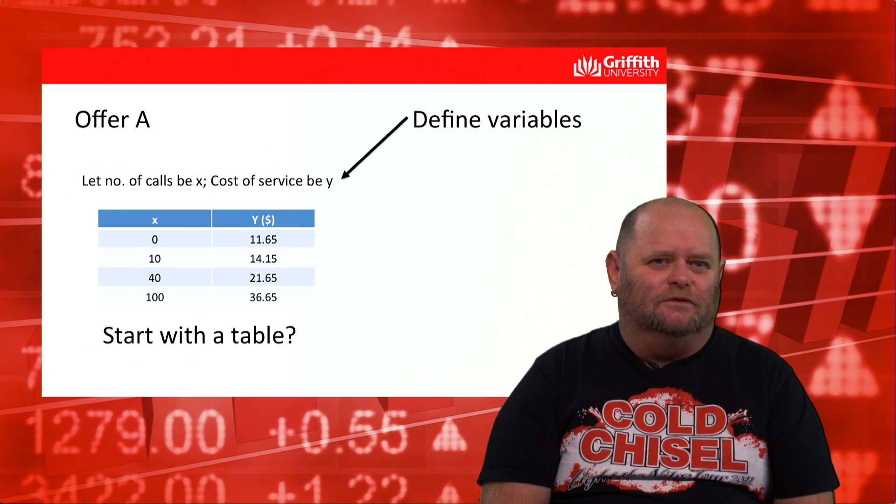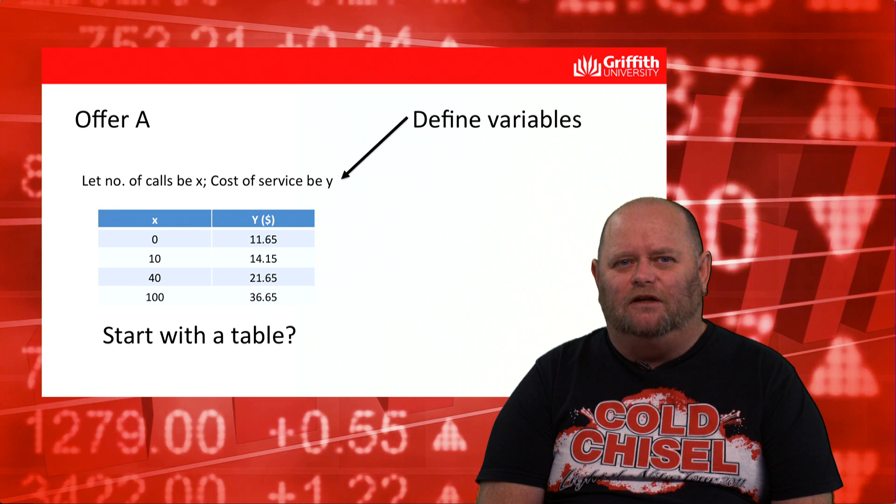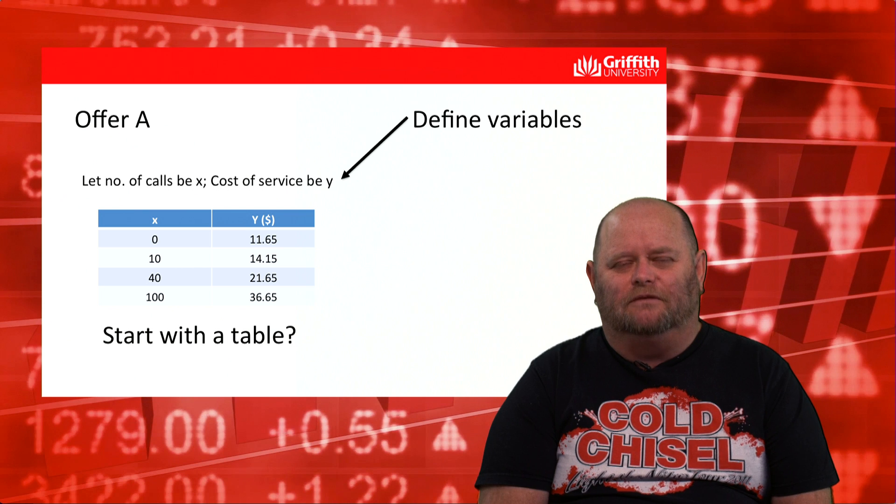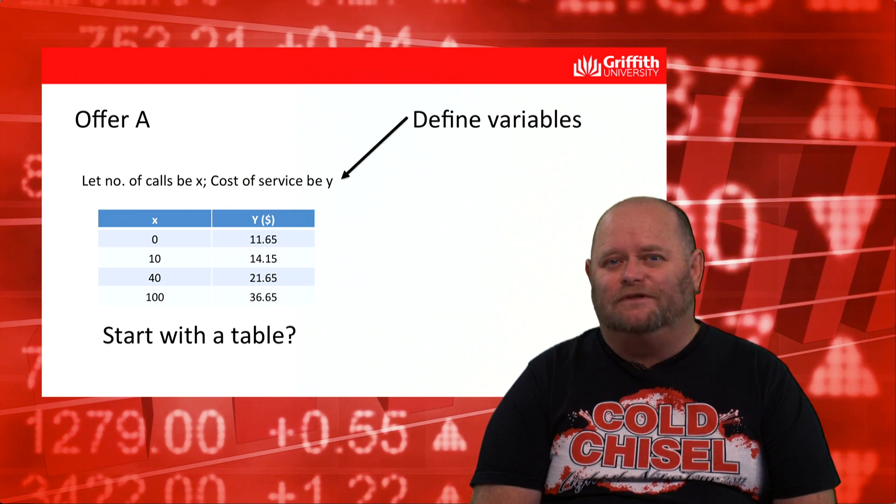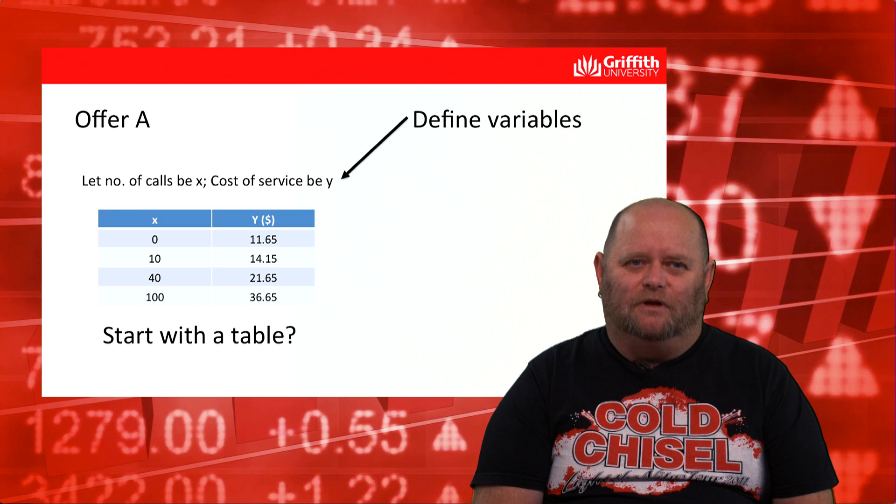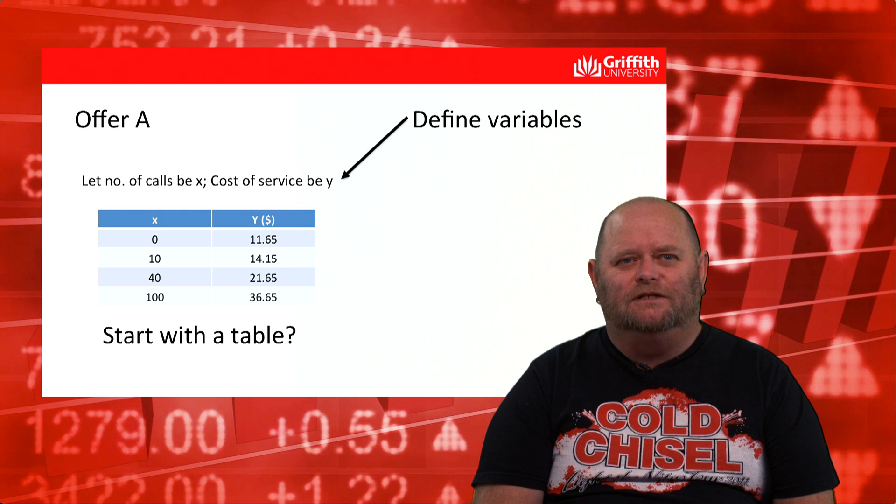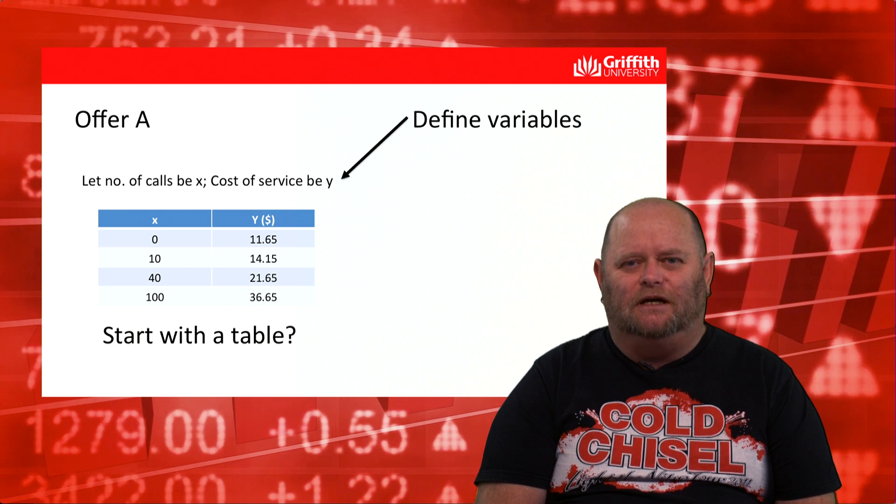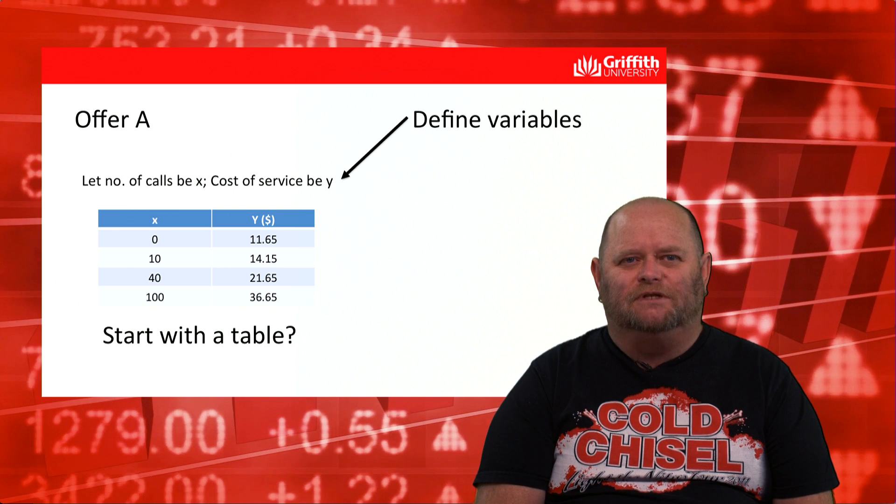We might start with a table. It's a tabular model. We've got some numeric values. Why would we do that? First of all, really importantly, what we do is we define what our two variables are. That's a fairly common thing for kids to miss out on these days, defining what those models are, and later when we get an algebraic model we don't know what those variables represent.